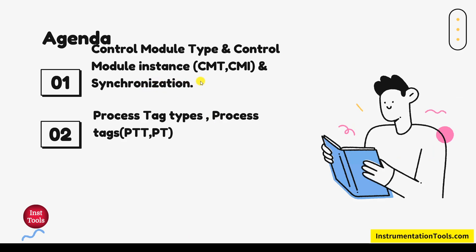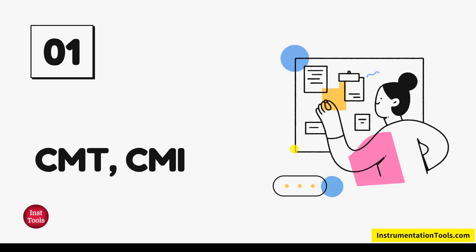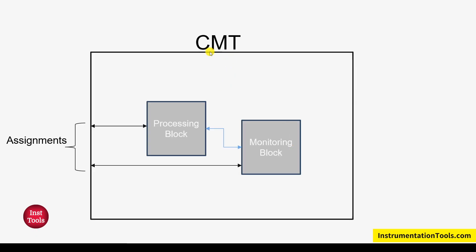Our agenda: control module type, control module instance, and synchronization. CMD is nothing but a CFC plane consisting of a number of FBs to satisfy one operation. For example, here you can see a CFC plane with a processing block and a monitoring block — these are FB instances. These two blocks may have interactions between them, and to communicate with the outside world — for example, with other charts, memory variables, or directly to the IO addresses — we use a concept called assignments.